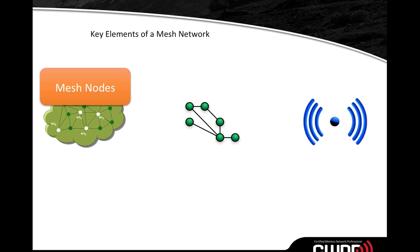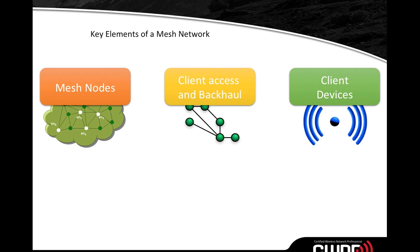The MAP is the acronym for Mesh Access Point, which uses a separate frequency as a wireless backhaul to replace the wire. That frequency makes a connection between a MAP and the RAP to get back to the network connectivity that the RAP is connected to. The next things we have are client access frequencies and backhaul frequencies, and the other thing we would have are client devices.